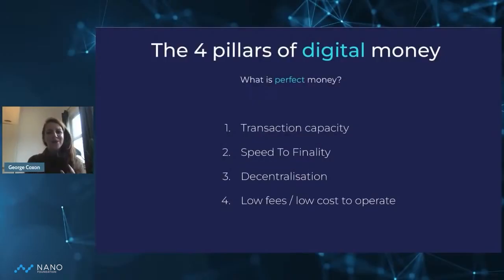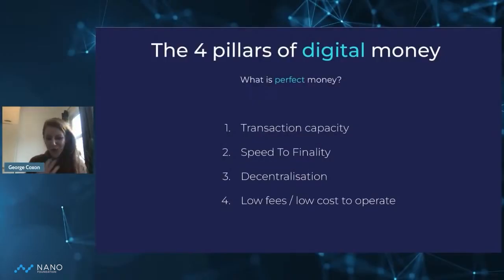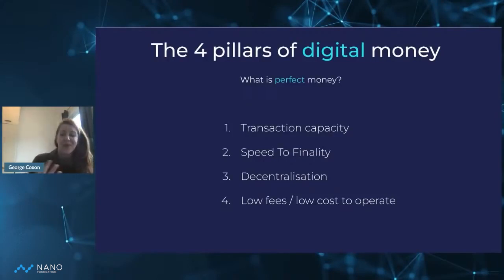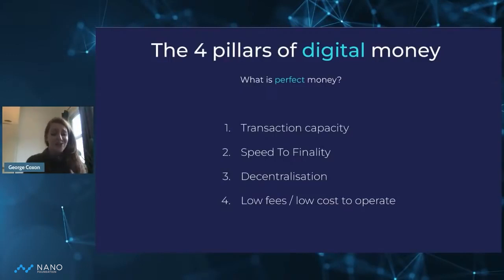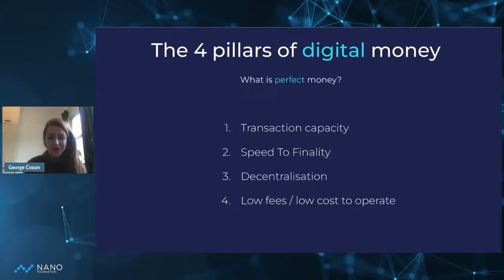The four pillars of digital money that are prevalent and incredibly important to make perfect money are: transaction capacity, speed to finality, decentralization — which is where CBDCs do not come in — and low fees with a low cost to operate.